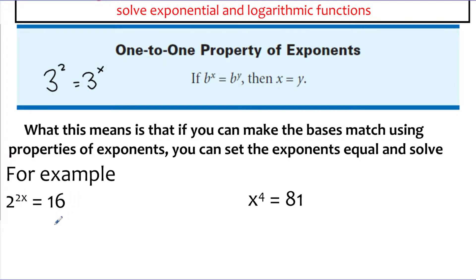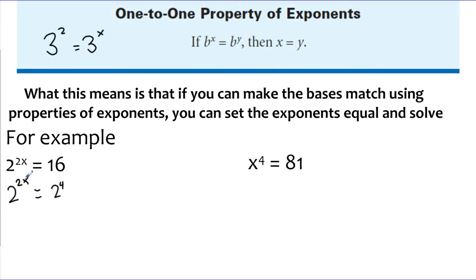...what we can do is say 16 can be written as something with a base of 2. In this example, we can say it's 2 to the 4th power. Because 16 is 2 to the 4th, now my left-hand side and right-hand side have the same base. That means the exponents have to be equal to each other. So 2x has got to be equal to 4, and dividing both sides by 2, x has got to be equal to 2.